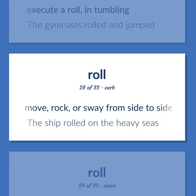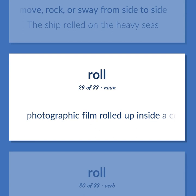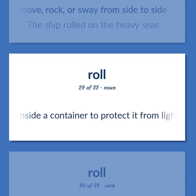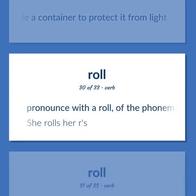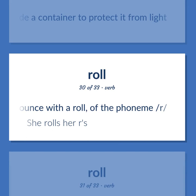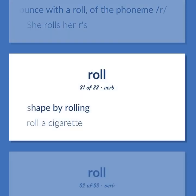Move, rock, or sway from side to side — the ship rolled on the heavy seas. Photographic film rolled up inside a container to protect it from light. Pronounce with a roll of the phoneme R — she rolls her R's. Shape by rolling — roll a cigarette.